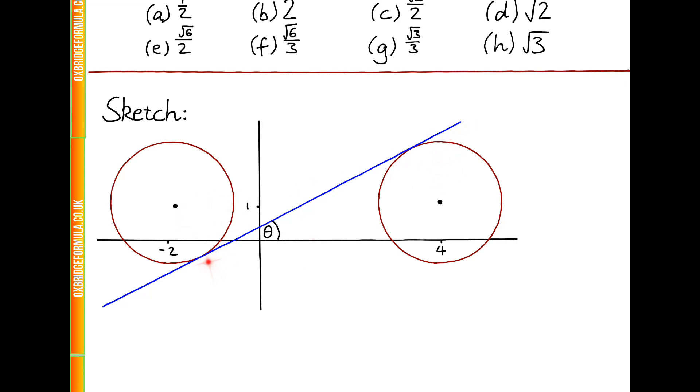Now, we know that this line is tangent to both circles, so it just touches each circle, and we can therefore draw on a radius in each circle, which is perpendicular to this line. So, those radii have length square root 3, and we can draw the symbol here to show that these are both right angles.